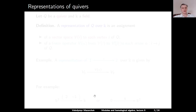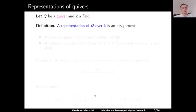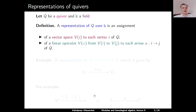So the main subject for today's lecture is representations of quivers. Let Q be a quiver and K a field. A representation of the quiver Q over the field K is an assignment of a vector space to each vertex of the quiver and of a linear operator between the corresponding vector spaces to each arrow of the quiver. In other words, if we have a vertex I, we have the corresponding vector space V of I, and if alpha is an arrow from vertex I to vertex J, then we have the corresponding linear operator V of alpha from V of I to V of J.